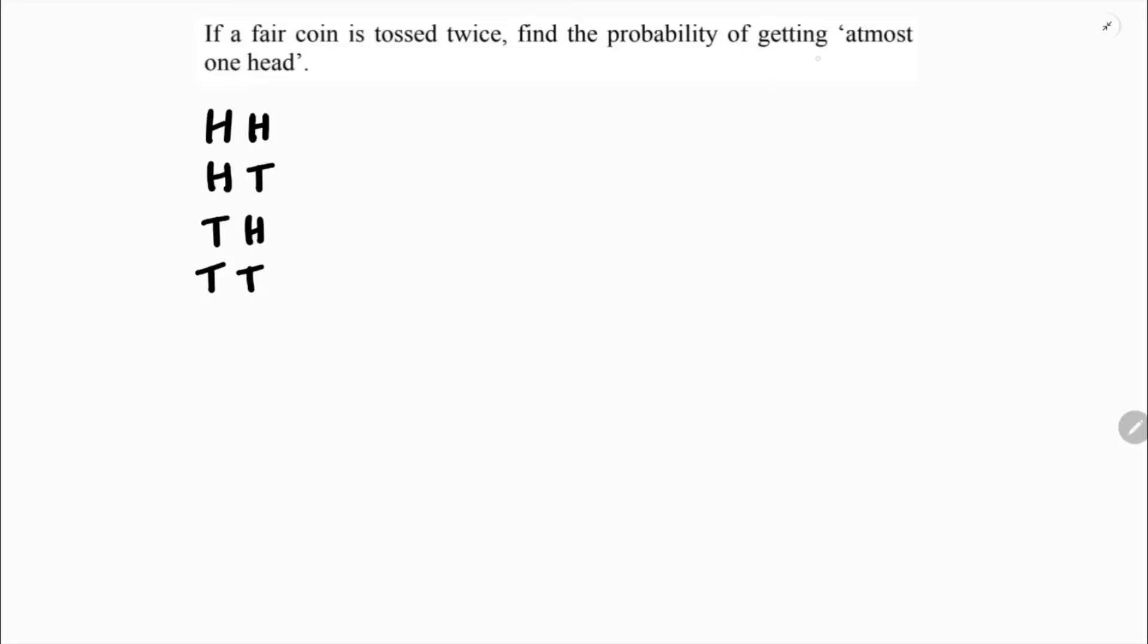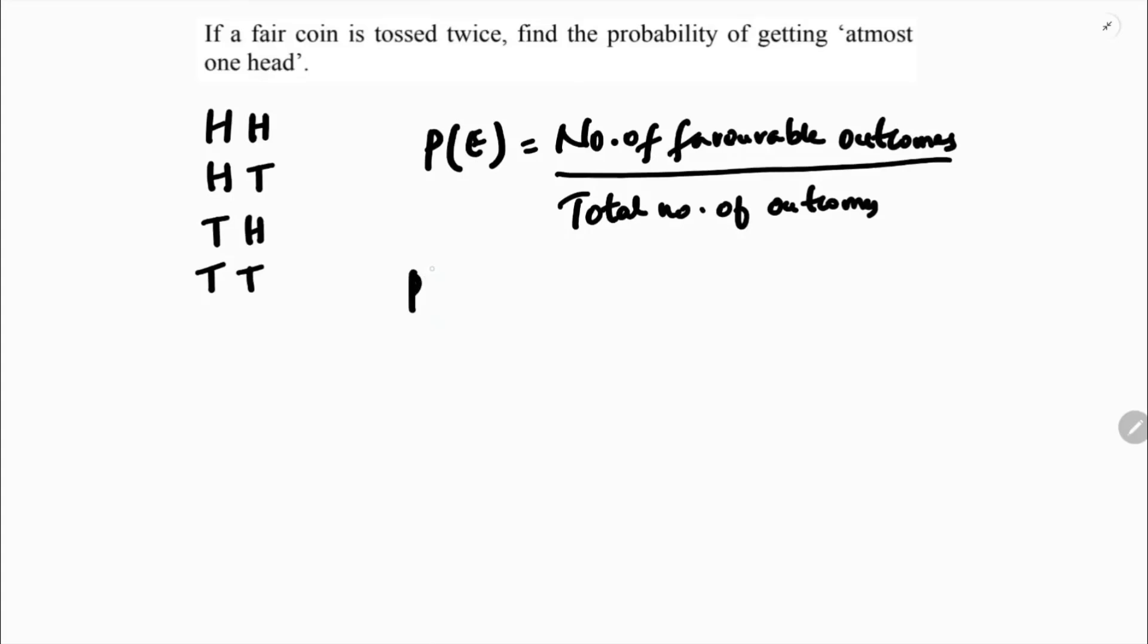They are asking what is the probability of getting at most one head. The probability of an event is the number of favorable outcomes divided by the total number of outcomes.